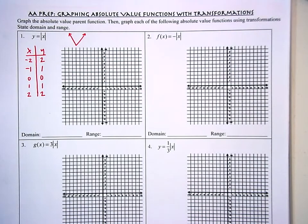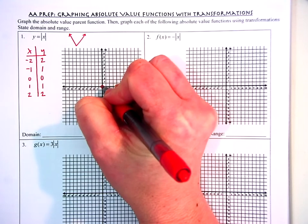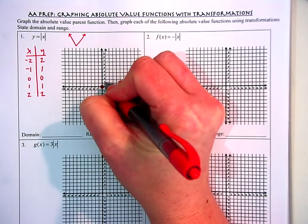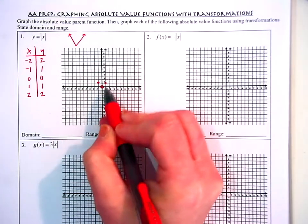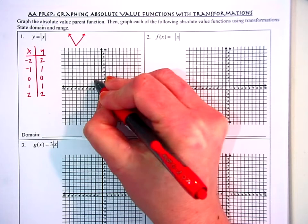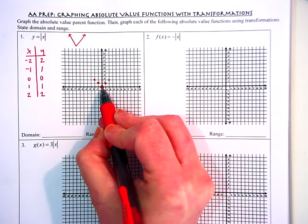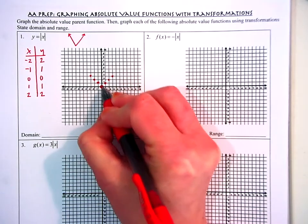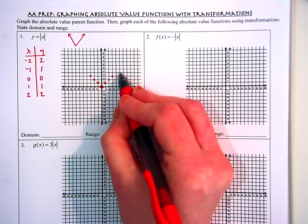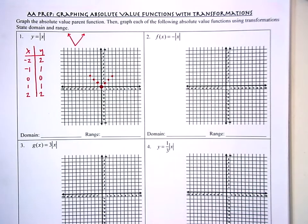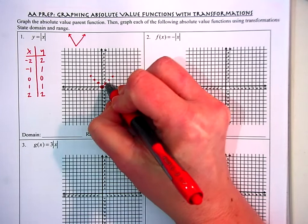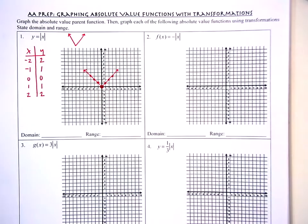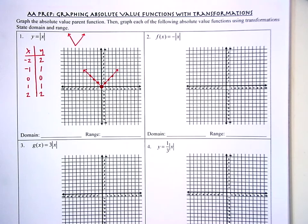I start at the origin — that's my vertex. From here I go over one, up one; over two, up two; over three, up three — and the same pattern on both sides. I can connect my dots, draw arrows at the ends, and here is my absolute value function: that beautiful V-shaped function.